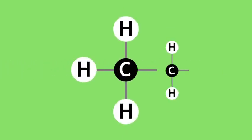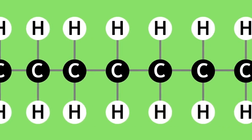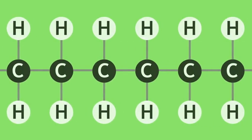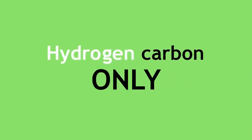There are many millions of organic compounds that you can make using hydrogen and carbon and arranging them in different ways. Hydrocarbons are defined as compounds made of hydrogen and carbon only.